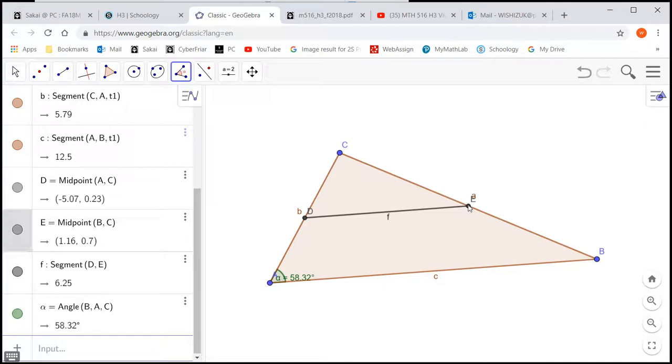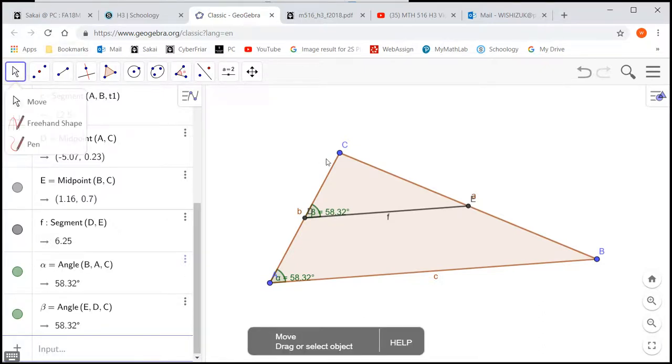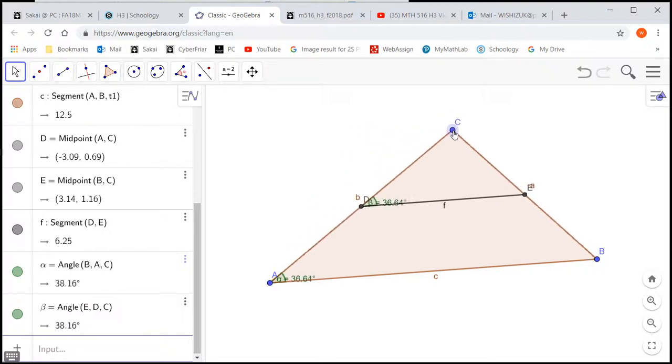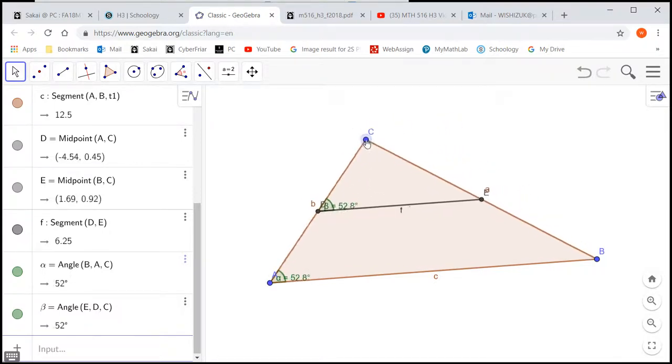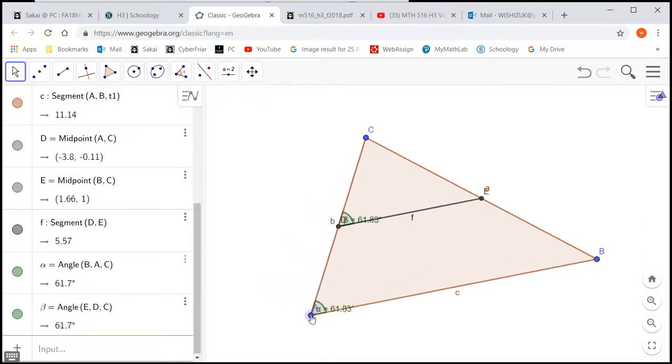Then we're going to do E, D, C. You can see that the angle is exactly the same. And even if you change, you know, move the vertices, you can see that these are all adjusted and they are always parallel.